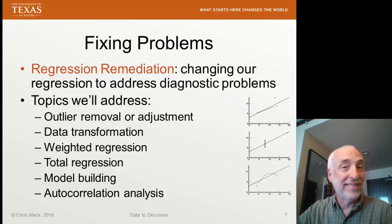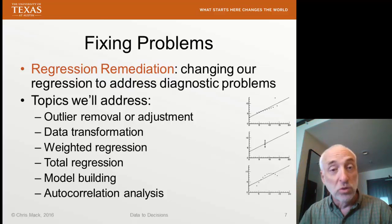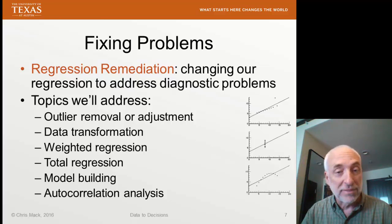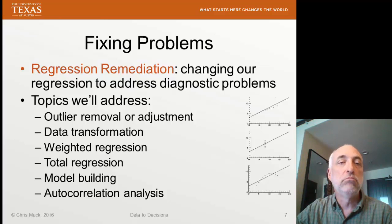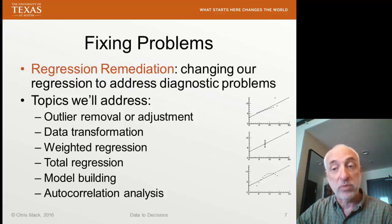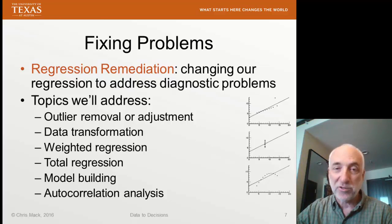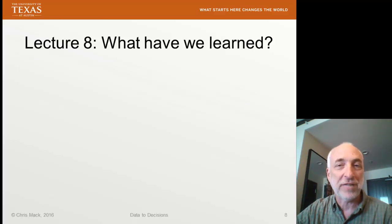So that's a lot of stuff we're going to look at in the coming weeks and months. But the result, if we have all of these tools in our toolbox, is we can do good regression under a wide range of real-world circumstances — things that happen when real data goes bad. So what have we learned here in Lecture 8?